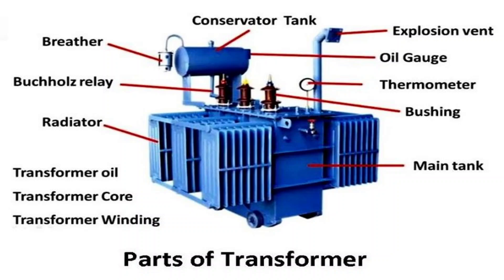First, we have the conservator tank. It is a cylindrical vessel mounted above the transformer. Its primary role is to provide space for the expansion and contraction of the transformer oil due to temperature changes. It ensures the oil level remains adequate, preventing air from coming into contact with the oil, which could lead to oxidation and degradation of insulating properties.